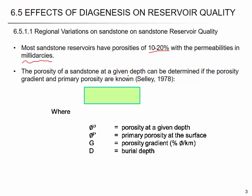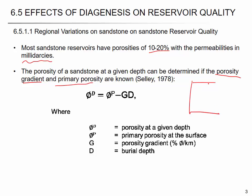Porosity at a given depth can be determined from the porosity gradient and the primary porosity, and this assumes that porosity decreases with depth. Here, porosity φ_d is the porosity at a given depth of interest, φ_p is the primary porosity at the surface — that's the initial porosity we discussed — and g is the porosity gradient given as percent porosity per kilometer, indicating how much porosity is being reduced per kilometer.